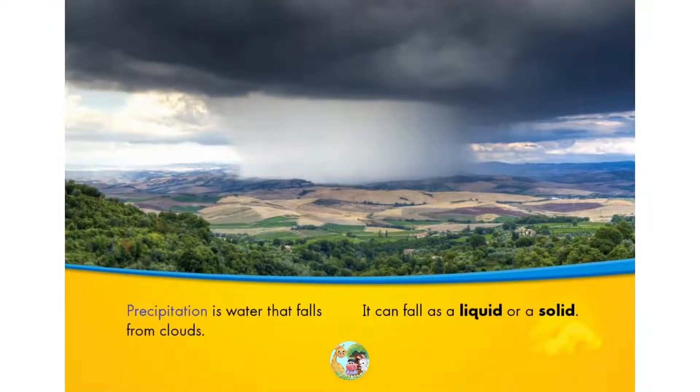Precipitation is water that falls from clouds. It can fall as a liquid or a solid.